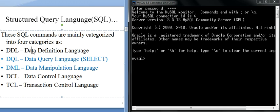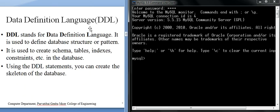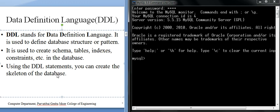Data Definition Language means: when we create any database or any table, the schema or definition of that database or table comes under the Data Definition Language. It is used to define the database structure or pattern. It is used to create schemas, tables, indices, constraints. Using DDL statements you can create the skeleton of the database.